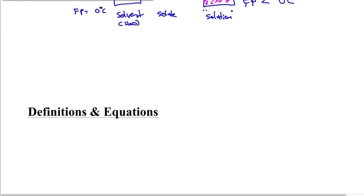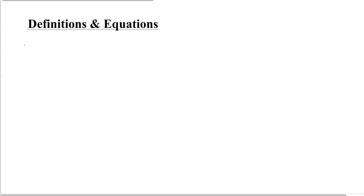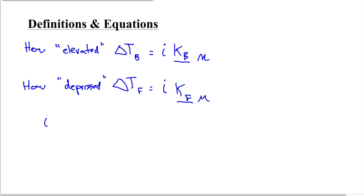So the key thing now here is really to talk about how much. So that's what our equations are going to do. How elevated. And the amount that it becomes elevated, we'll call that delta T_B. The change in boiling point. Or we might say, how depressed. So how depressed is that freezing point going to be? We'll call that delta T_F. And there's two equations. They're exactly the same. They both equal I times a constant. In this case, we'll call it K_B. In this case, we'll call it K_F. This constant is always given to you on a table, multiplied by little m.